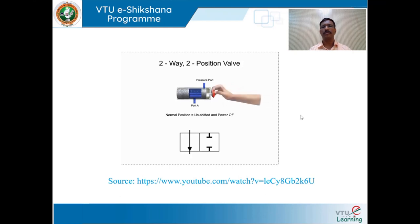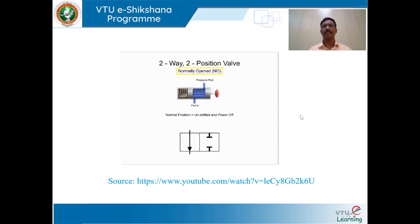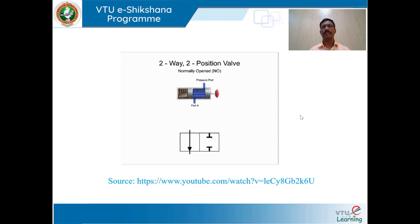The terms normally open and normally closed describe the condition of a valve in its normal position. A valve whose normal position allows unrestricted fluid flow is normally open; one that blocks flow is normally closed. A spring return valve uses a spring to return the spool to normal position after actuation. The primary actuator symbol is placed on the other end of the graphic symbol — in this case a push button.